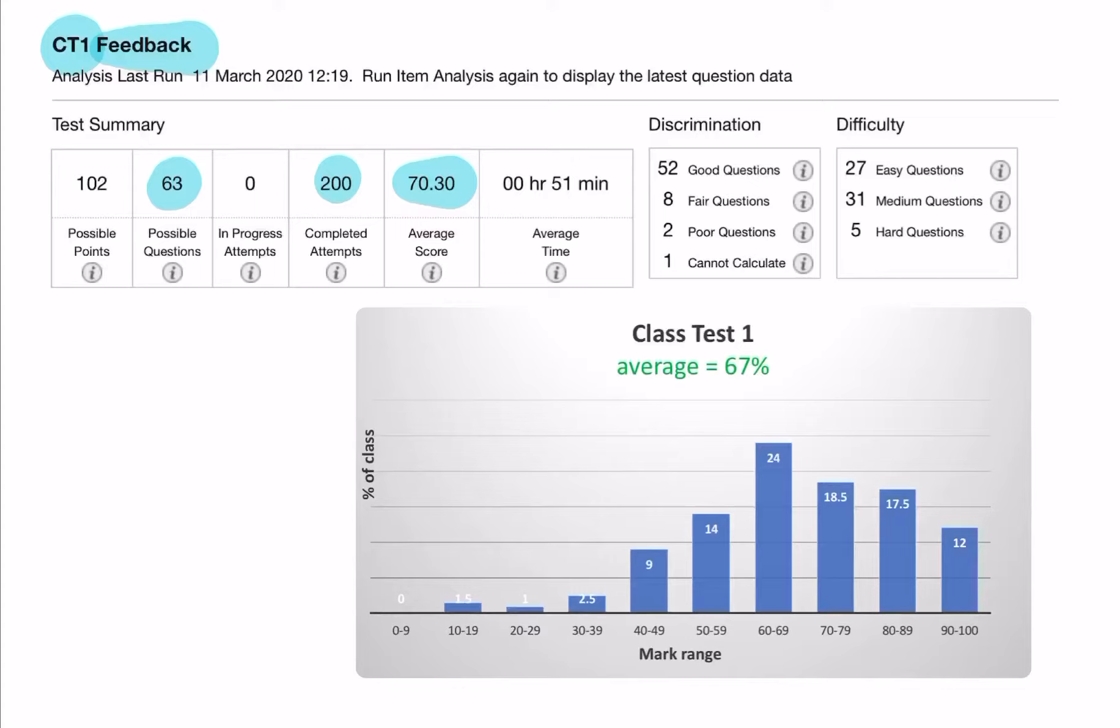In terms of the difficulty of the questions, according to VITAL, 27 of the 63 questions were easy, 31 were medium, and 5 were difficult or hard questions.